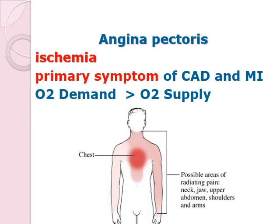Angina is more of a symptom rather than a disease process itself. Angina could be caused by ischemia. Ischemia is the lack of oxygen and is also considered to be the primary symptom of your coronary artery disease and myocardial infarction. Angina is caused by the increase in the demand of oxygen in proportion to the supply of oxygen.